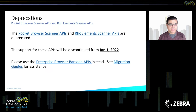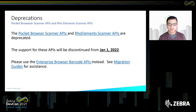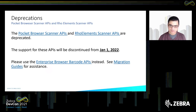Let's talk about a few deprecations. There are two scanning APIs that were legacy-inherited into Enterprise Browser: the Pocket Browser scanning API and the Raw Element Scanner APIs. These are deprecated — by the end of this year, we will no longer support them. If you are using them, please start using Enterprise Browser barcode APIs. There is a migration guide with information on the equivalent APIs, and we strongly recommend you start transitioning as soon as possible.